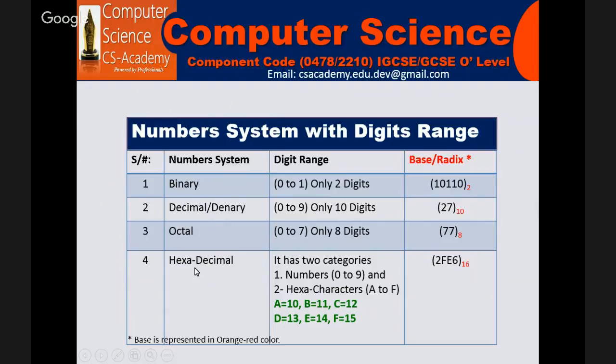Coming to the fourth one, hexadecimal, it has two different categories. The first is numbers from 0 to 9, and the second is hexadecimal A to F, which range from A equals 10, B equals 11, C equals 12, D equals 13, E equals 14, and F equals 15.